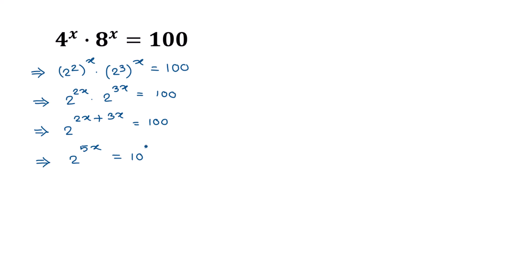Now 100 can be written as 10 squared. Taking log of both sides, we get log of 2 to the power 5x equals log of 10 squared. By the logarithm power law, log a to the power b equals b times log a.